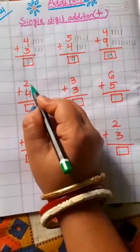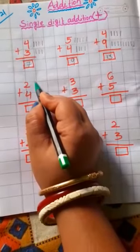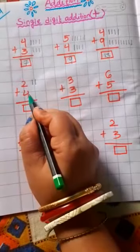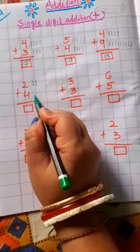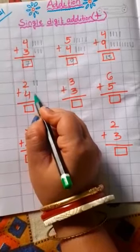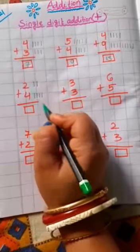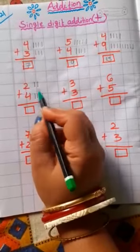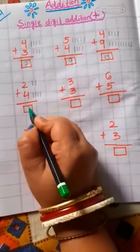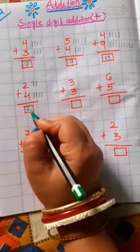Now next number. The first number is 2, so you draw here 2 lines: 1, 2. Now, which number is this? 4. Here you draw 4 lines: 1, 2, 3, 4. Now children, count all the lines together: 1, 2, 3, 4, 5, 6. Your answer is 6. You write here 6. 2 plus 4 is equal to 6.